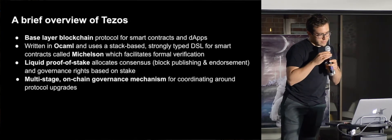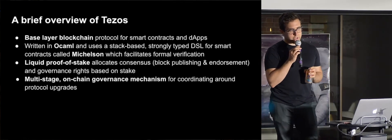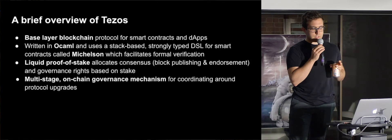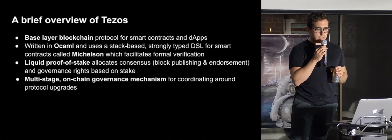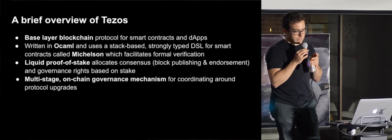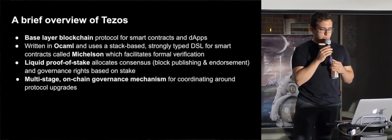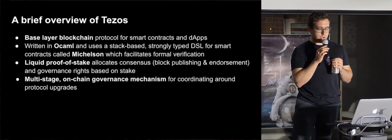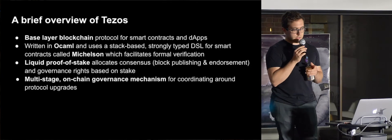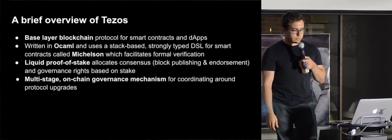Just to give a brief overview of Tezos: it's a base layer blockchain protocol for smart contracts and dApps. The core protocol is written in OCaml. It has a domain-specific language for smart contracts called Michelson, designed to facilitate formal verification — created by a bunch of formal methods experts in Paris. The proof-of-stake consensus algorithm allocates block publishing and endorsement rights based on proof-of-stake, as well as governance rights based on stake. And it has a multi-stage on-chain governance mechanism for coordinating token holders around protocol upgrades.